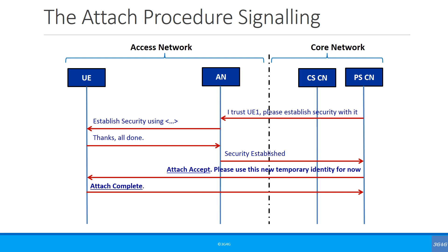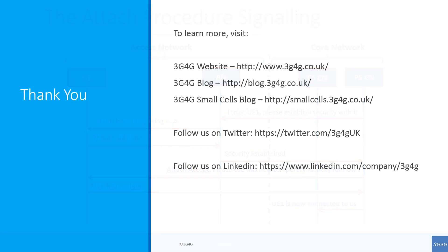The UE will respond with an attach complete message. As soon as the core network receives the attach complete message, it will inform the CS core network that UE1 is now connected. And that's the very simple attach procedure.